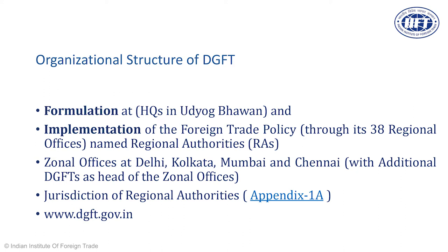Appendices and Ayat Neryat forms are two additional documents which are part of the foreign trade policy, under which many lists and other documents relevant to the exporting community are present. We have four zonal offices — the headquarters and four big offices in Delhi, Kolkata, Mumbai, and Chennai.